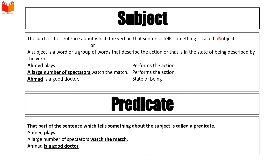Sentence کا دوسرا حصہ predicate کہلاتا ہے۔ That part of the sentence which tells something about the subject is called a predicate۔ Sentence کا وہ حصہ جو subject کے متعلق معلومات دے اسے predicate کہتے ہیں۔ 'Ahmad pleases' — احمد subject تھا اور 'please' predicate ہے۔ 'A large number of spectators watch the match' — 'watch the match' predicate ہے۔ 'Ahmad is a good doctor' — 'is a good doctor' predicate ہے اور احمد subject ہے۔